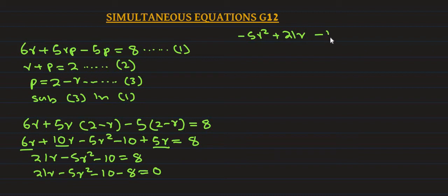21r minus 5r squared minus 10 minus 8 equals 0. So negative 5r squared plus 21r minus 18 equals 0. We can write this as 5r squared minus 21r plus 18 equals 0.